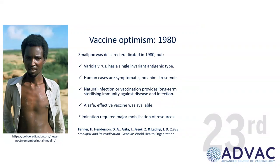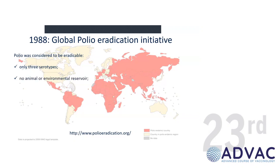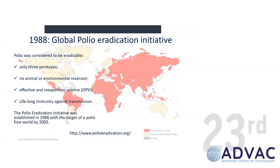After finishing my degree and doctorate, I went to work at NIBSC in 1988. The Global Vaccination Initiative against polio was introduced, and we thought it would be radical because there were only three serotypes, no animal or environmental reservoir, and an effective and inexpensive vaccine that blocked transmission — OPV — with lifelong immunity against transmission. We were going to eliminate polio by 2005. Obviously we didn't manage that. Why not? There are all sorts of reasons, including the political environment.